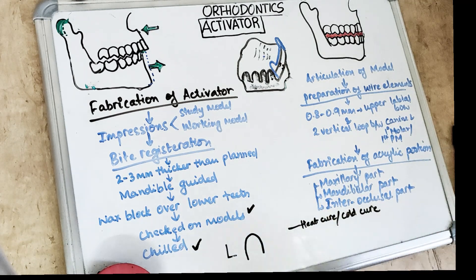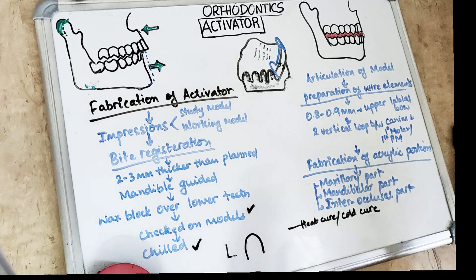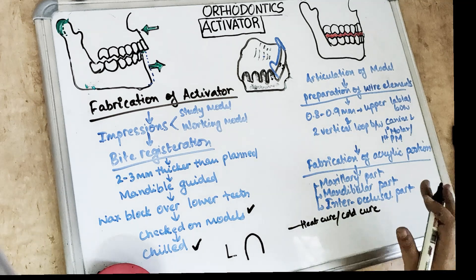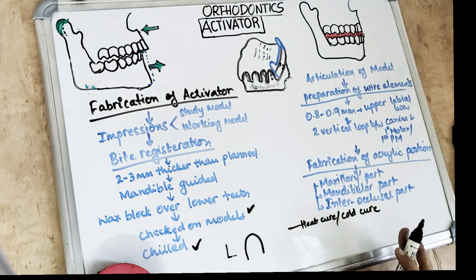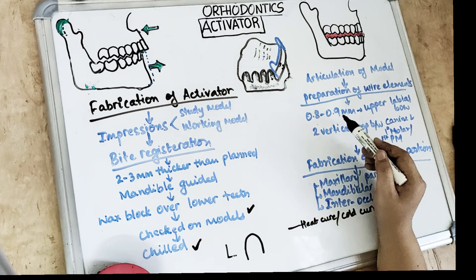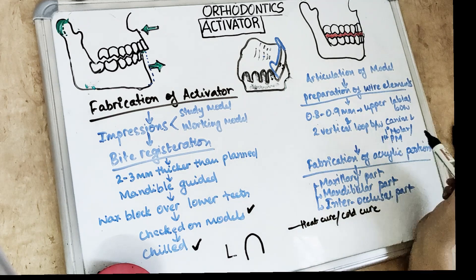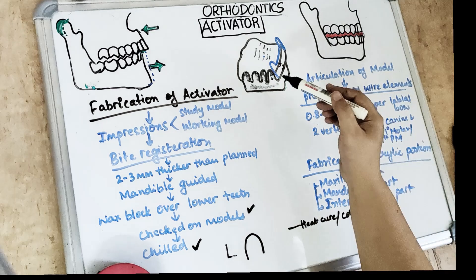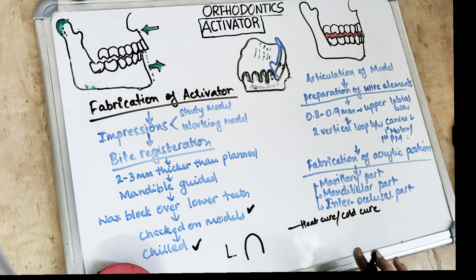Once the upper and lower models are articulated with the bite, the wax elements are prepared on the models. The usual design includes the upper labial bow, made from 0.8 to 0.9 millimeter wire, consisting of two horizontal sections with two vertical loops. The ends of the vertical loops enter the acrylic body between the canine and the first premolar, or the deciduous molar if present. The labial bow can be active or passive depending on the situation.